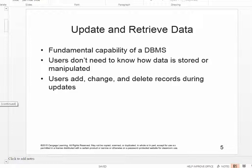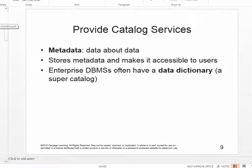Users of your database might not necessarily know exactly how your tables look or how data is stored. But even though they don't know that information because it might not be in the view they're presented, they can still add, change, and delete different records. Database management systems also provide catalog services using metadata, which is data about data. Your DBMS stores metadata and makes it accessible to users. Metadata is attached to lots of data we use every day — for example, every time you take a picture with your phone, metadata is stored such as the time, location, and type of phone or lens used.